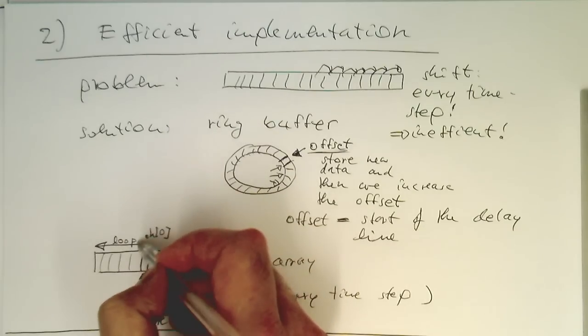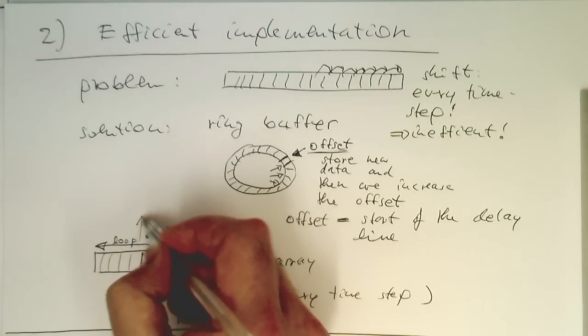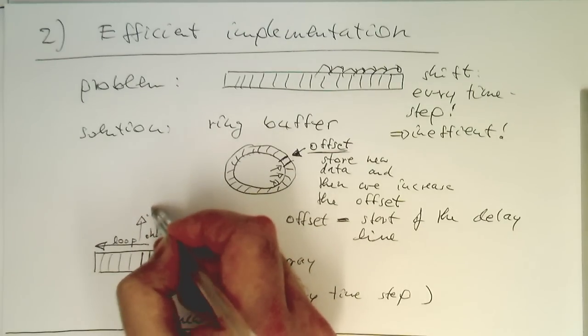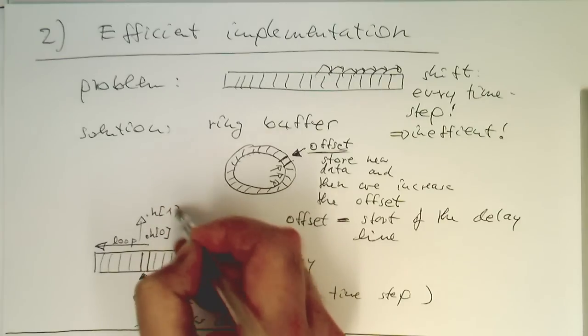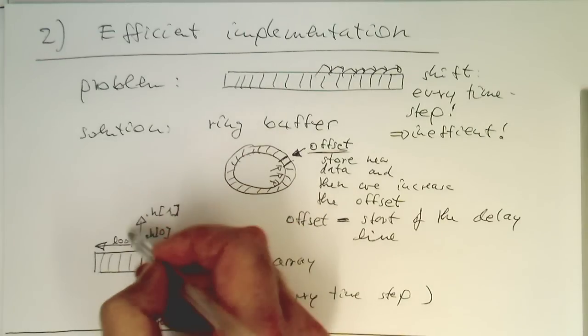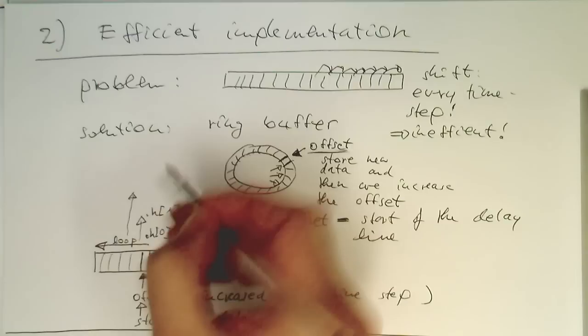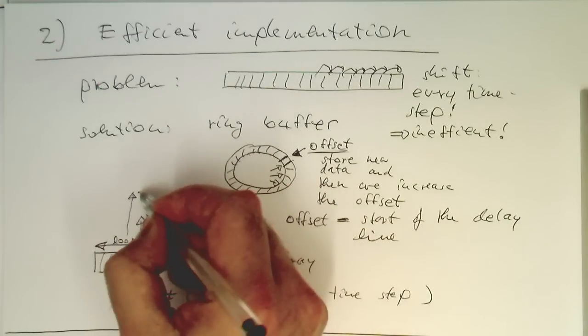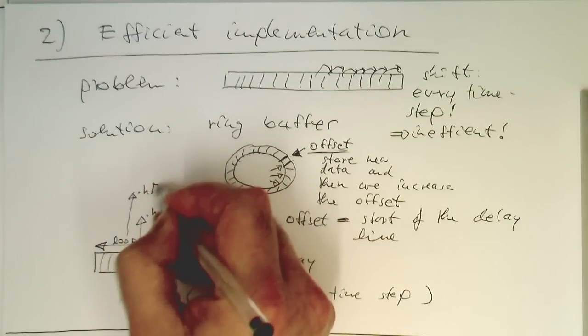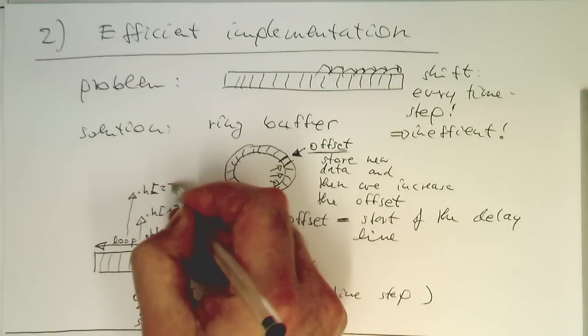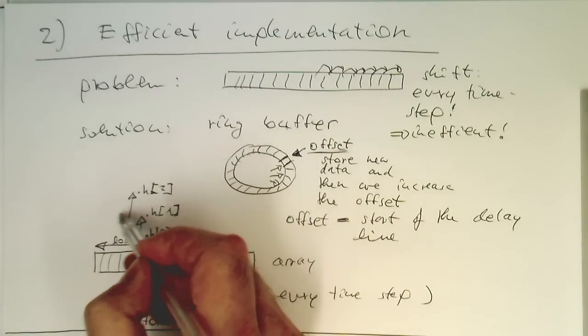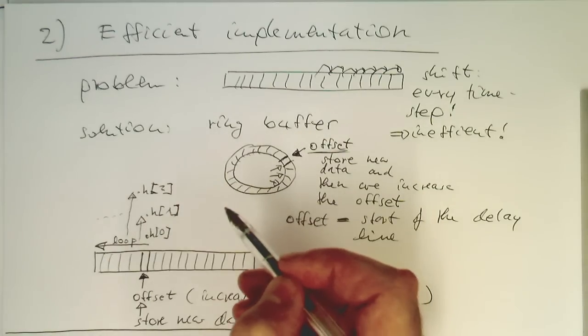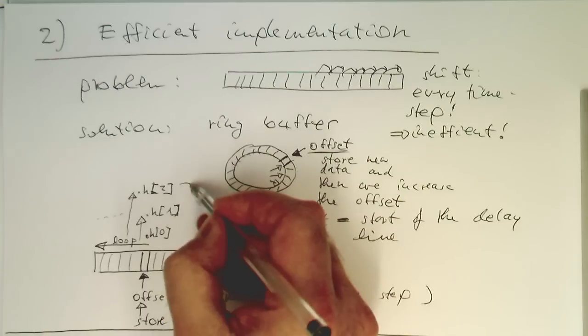And then the next one here, this one here. We are multiplying with h of two. And so on and so on. And just summing this here up.